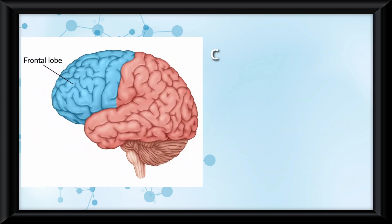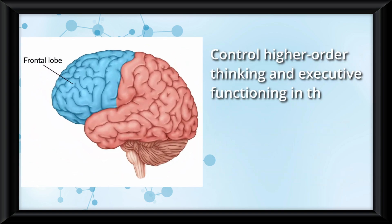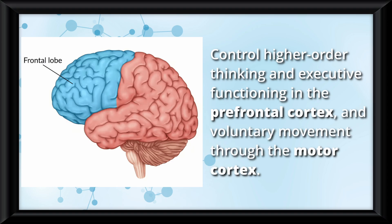And frontal lobes, behind the forehead, control higher-order thinking and executive functioning in the prefrontal cortex, and voluntary movement through the motor cortex.